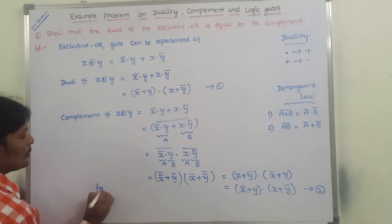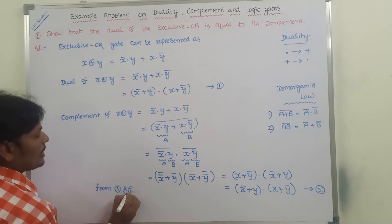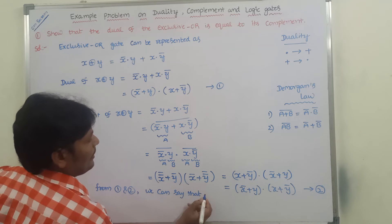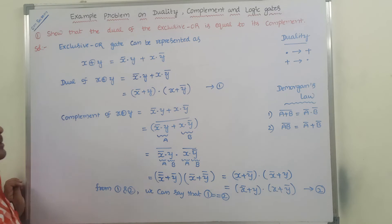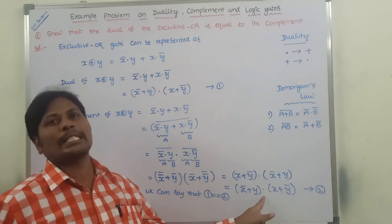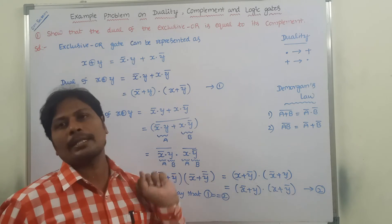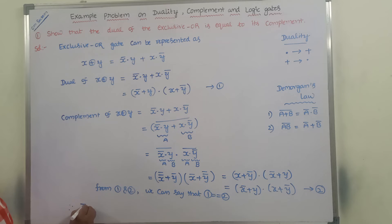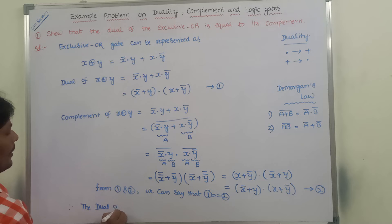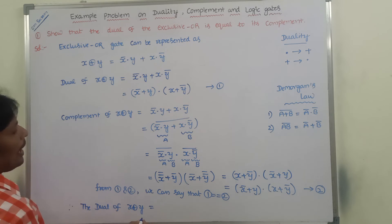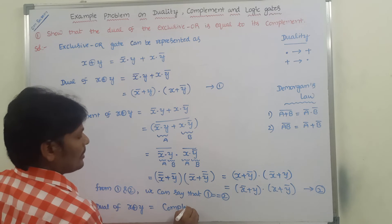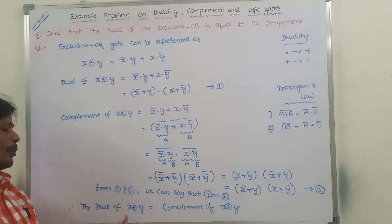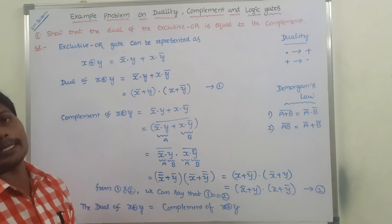From Equations 1 and 2, we can say that Equation 1 equals Equation 2. Both give X̄+Y multiplied by X+Ȳ, so both equations are equal. Therefore, we can say that the dual of exclusive OR Y is equal to the complement of the exclusive OR gate.